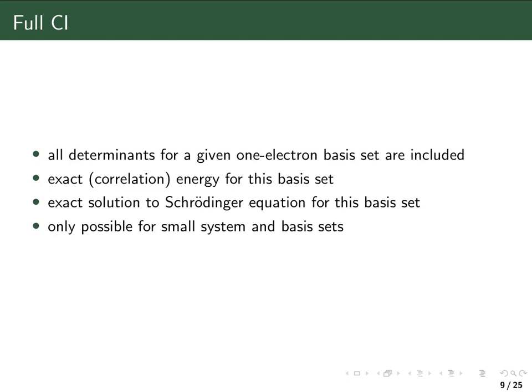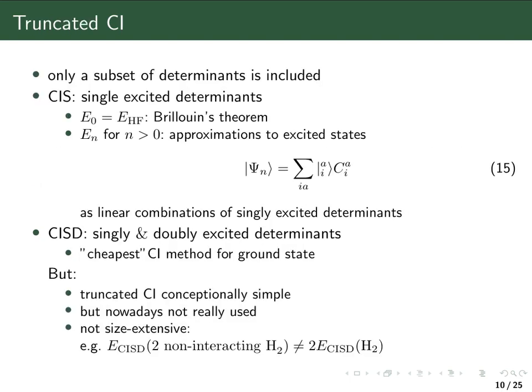Full CI calculations serve as reference values for all other methods. Unfortunately, they are so large, time-consuming, and memory-intensive that they are only possible for small systems and small basis sets. The other kind are truncated CI calculations, where one includes only a subset of the possible determinants. One typically includes determinants of a particular type — for example, in CI singles, only the single-excited determinants are included.